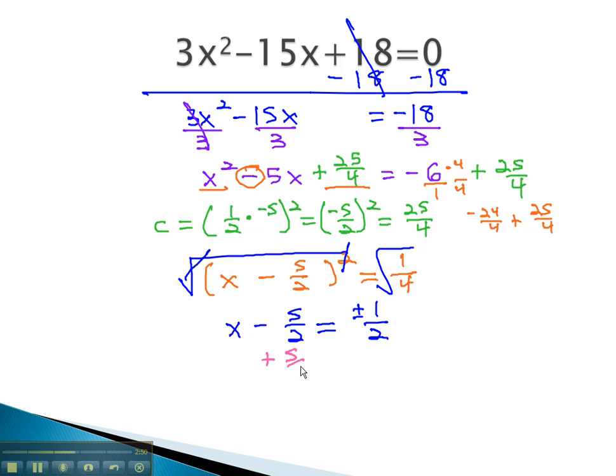We now isolate x by adding 5 halves to both sides, and we get x is equal to 5 halves, plus or minus 1 half.